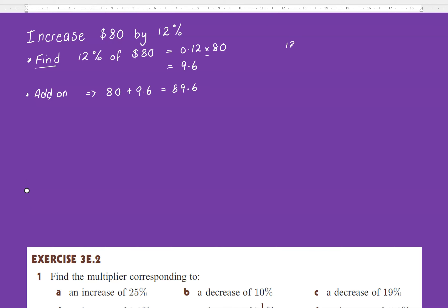And we can say 12% is 0.12. Remember, if you can't do that in your head, then 12 divided by 100 times 80. And that will give you the same result. But we should be able to convert percentages into decimals pretty quickly. We get 9.6. And then we add on the 9.6 to the 80.